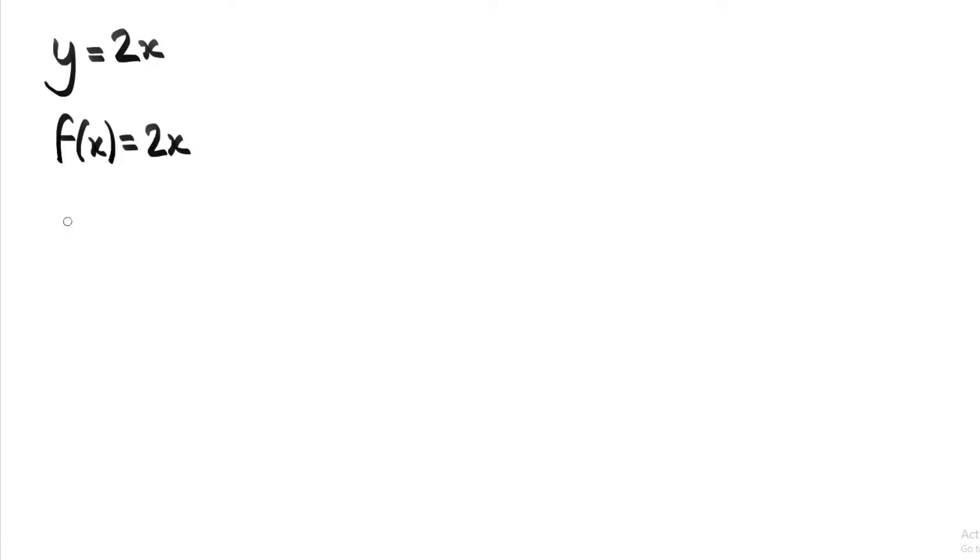And now a natural question to ask is, well, what kind of things does the function take as an input and what kind of things does it spit out as an output? So in this case, we understand that x is standing in for some number. So for example, if we give the function the input of 5, f of 5 is going to be equal to 2 times 5, which is 10.